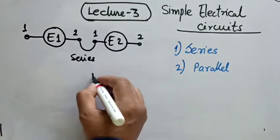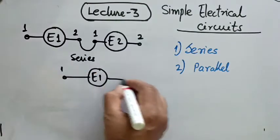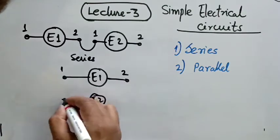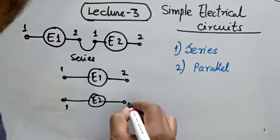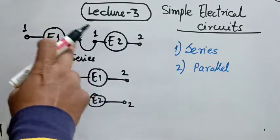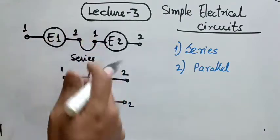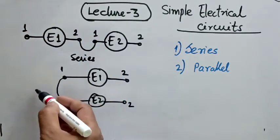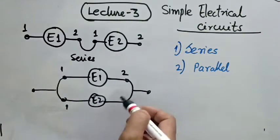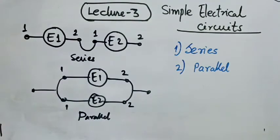On the contrary, if we take the same element E1 having terminals 1 and 2 and E2 again with terminals 1 and 2, instead of connecting the second terminal of element 1 to the first terminal, we connect both first terminals together and both second terminals together. So this becomes a parallel electrical connection.